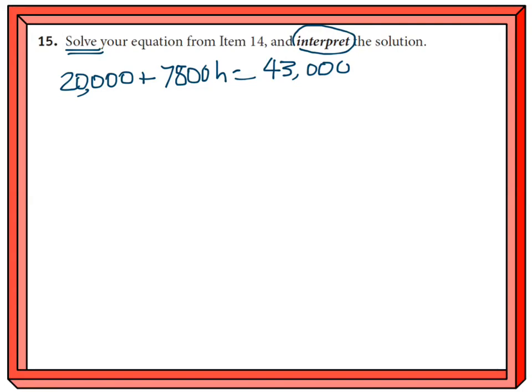There's large numbers in it, but there's nothing complicated here. So first I've got to get rid of this 20,000, so I'm going to subtract 20,000 from both sides. So when I do, I get 7800H is equal to 23,000.